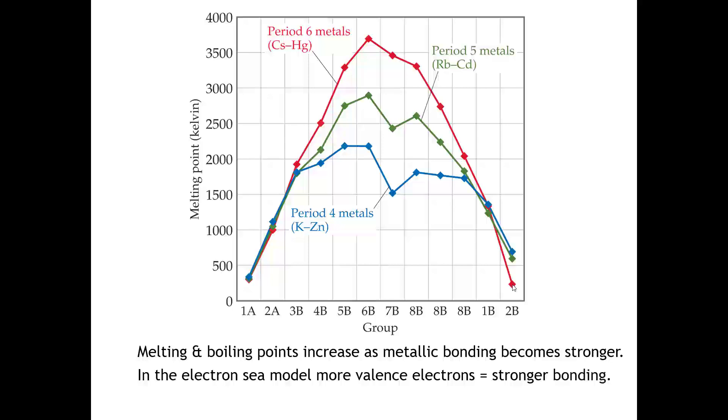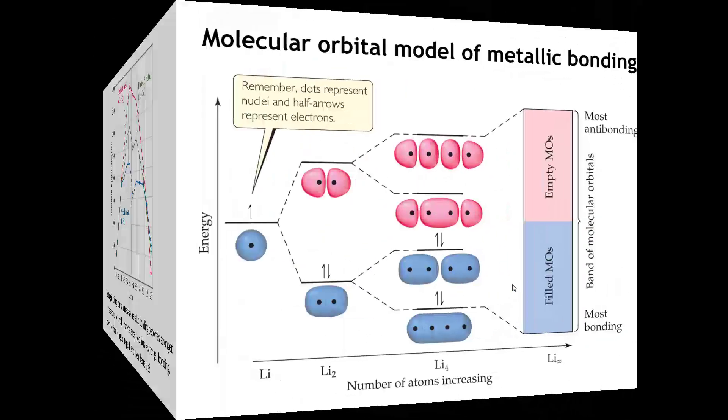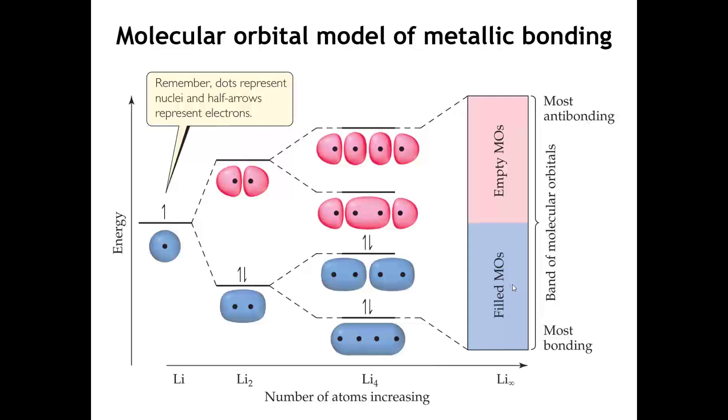However, in the electron-sea model, we would expect this to continue to go on. But what we see experimentally is that in the middle, that's where we reach the maximum bonding. And then the metallic bonding gets weaker as we continue to add more valence electrons. So, how can we understand that?